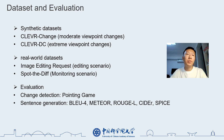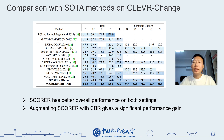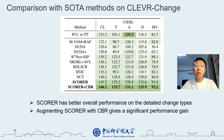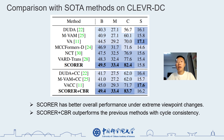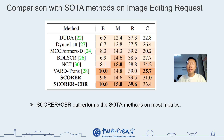To evaluate the performance of our method, we conduct extensive experiments on four public datasets. On the CLEVR-Change dataset, our SCORE has better performance on both settings, and augmenting SCORE with CBR gives a significant performance gain. We can observe similar results under the detailed change setting. On the KVDC dataset with extreme viewpoint change, SCORE achieves better overall performance, and SCORE plus CBR outperforms previous methods with cyclical consistency. On the image editing requests dataset, SCORE plus CBR outperforms the state-of-the-art methods on most metrics.